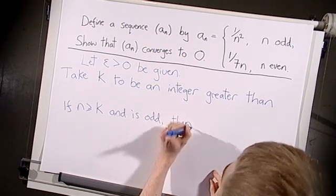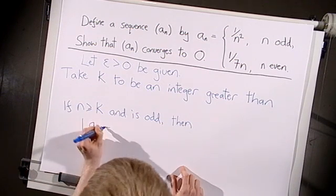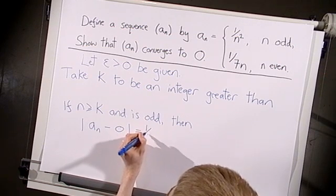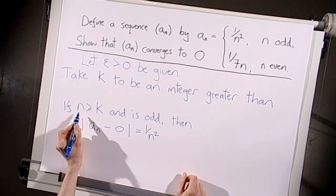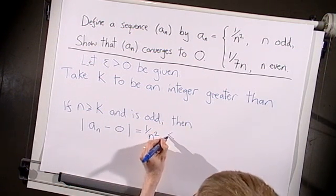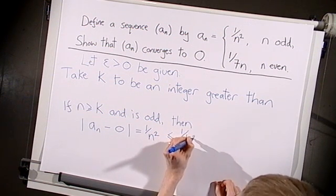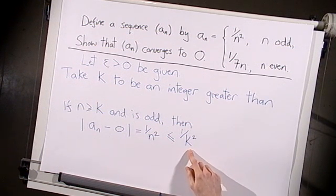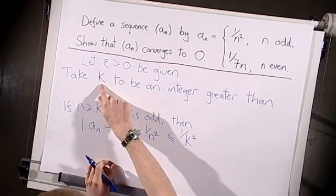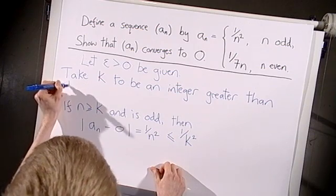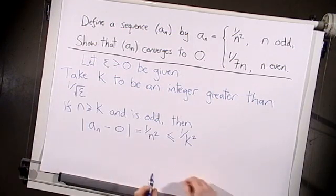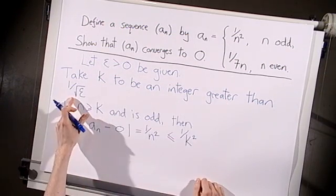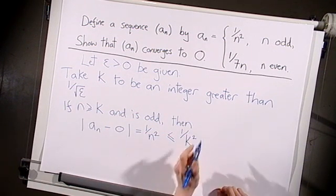Thinking about what it is we need to prove, we look at the distance between aₙ and 0. When n is odd, aₙ is 1/n², so this distance is 1/n². But we're taking n to be greater than or equal to k, so this will be less than or equal to 1/k². Now I'd like to make this term less than epsilon, so I should go back and choose k to be greater than 1/√ε. If k is greater than 1/√ε, then 1/k² will be less than epsilon.